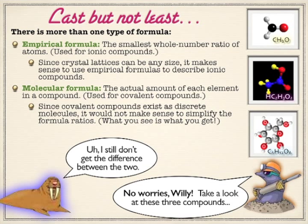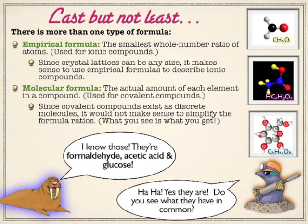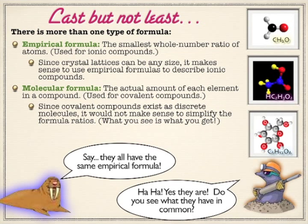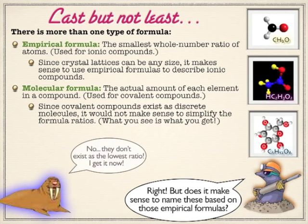So they would all have the same empirical formula. But the molecular formulas of the last two do not match the empirical formulas. When we're dealing with covalent compounds, many of our compounds are going to have ratios that have not reduced to the simplest ratio — like glucose, C6H12O6. That's why when we have covalent compounds, we don't name them by their empirical formulas, because that would give us misinformation.